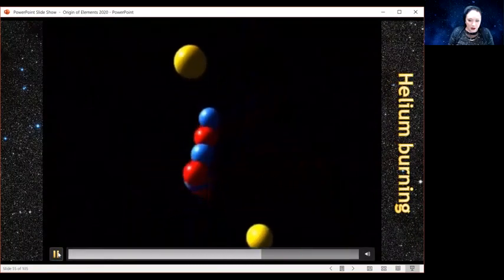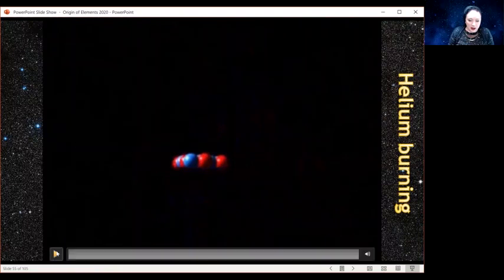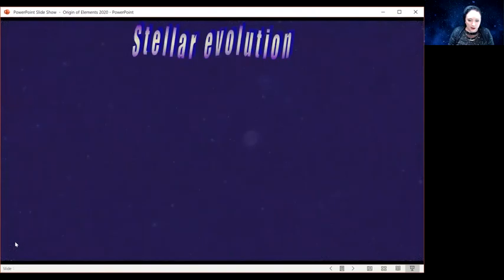So here we have helium burning. Three heliums come together, and it makes carbon. Let's watch that again. Three heliums come together, and we get some gamma rays flying out. And that gives us a carbon afterwards.